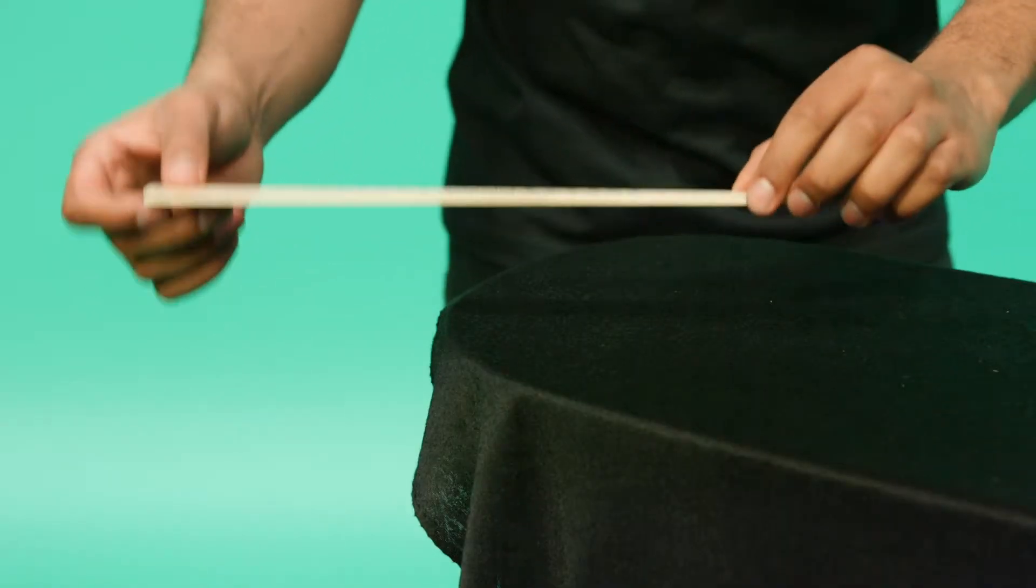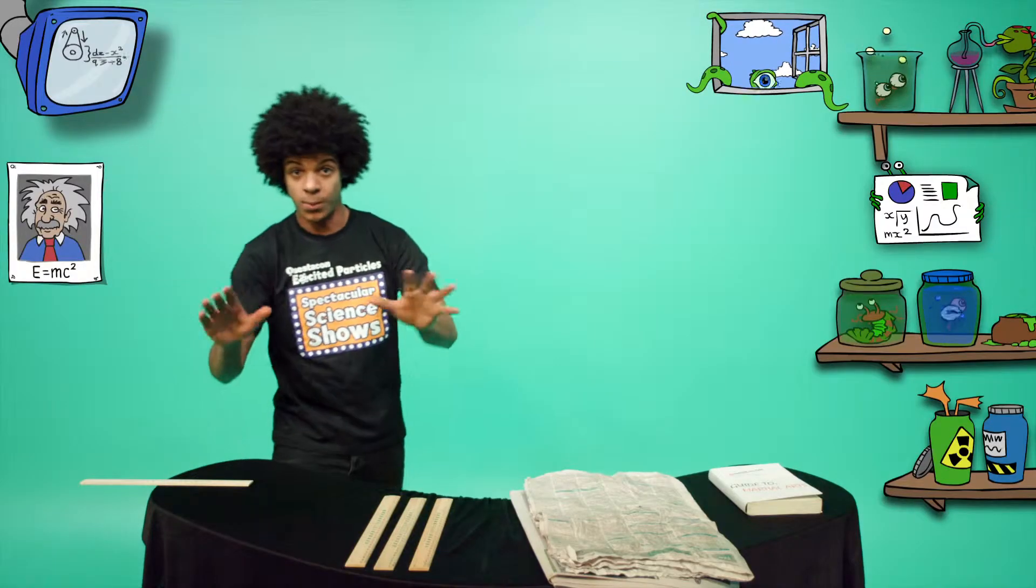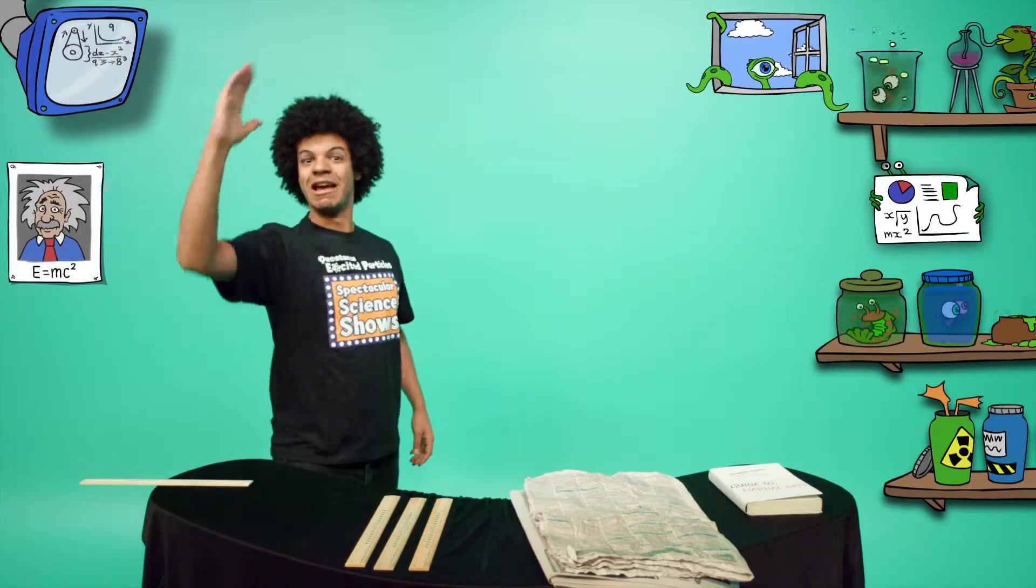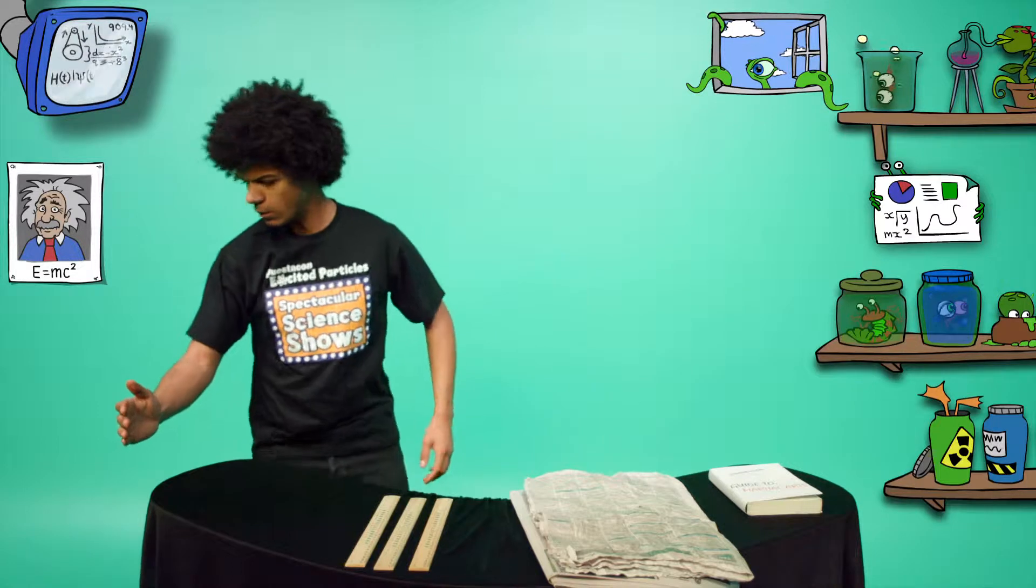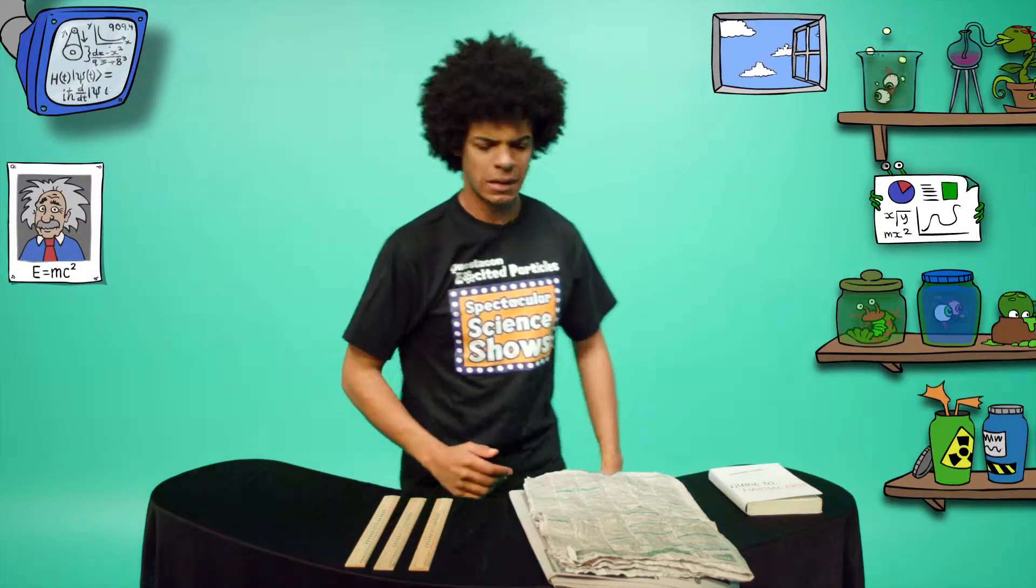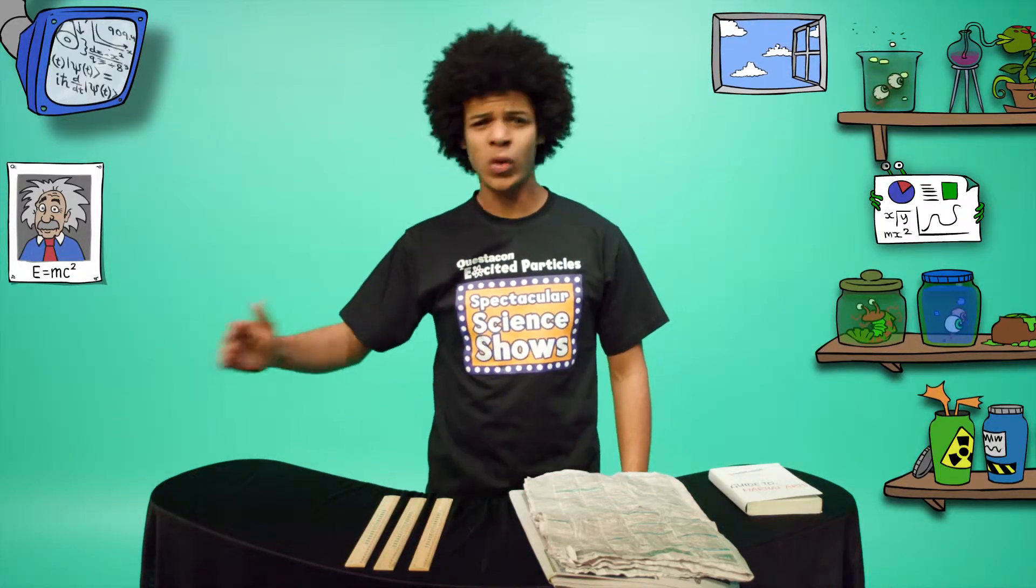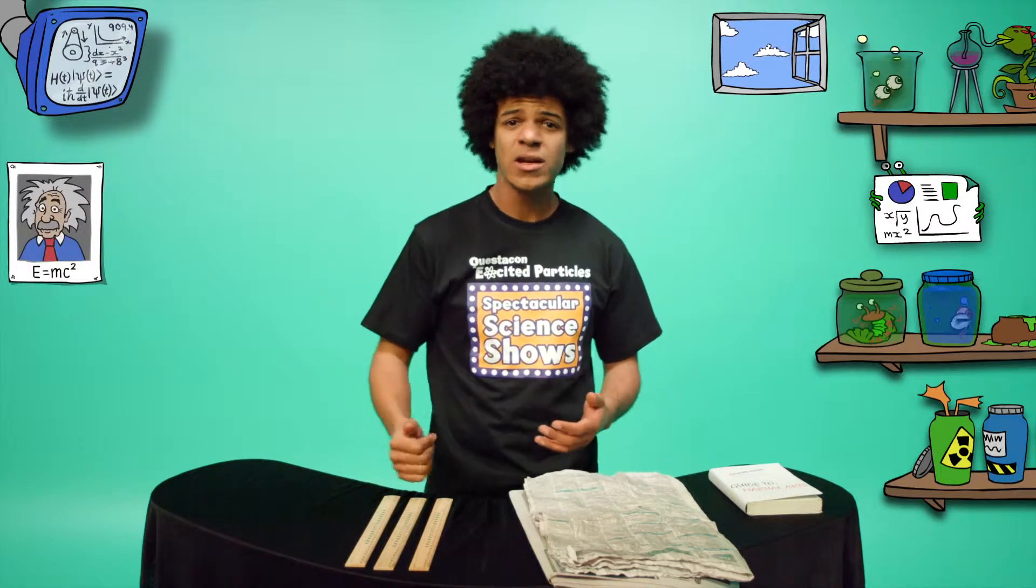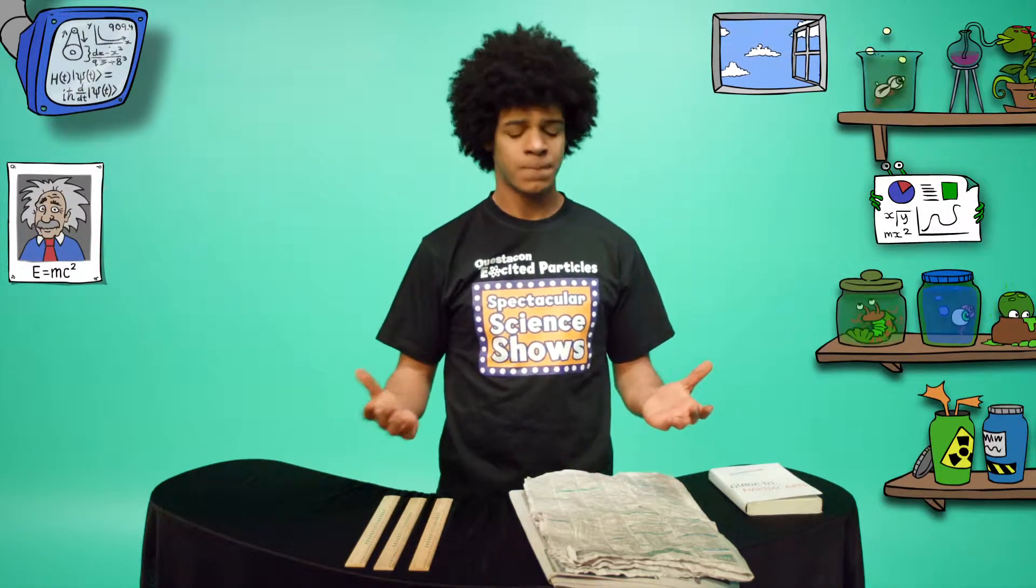Take your ruler and place it over the side of the table, just like this. Prepare your Hand of Fury and hi-yah! Oh, that didn't work very well, did it? My Hand of Fury hit the end of the ruler with great force, but the other end flew up in the opposite direction.